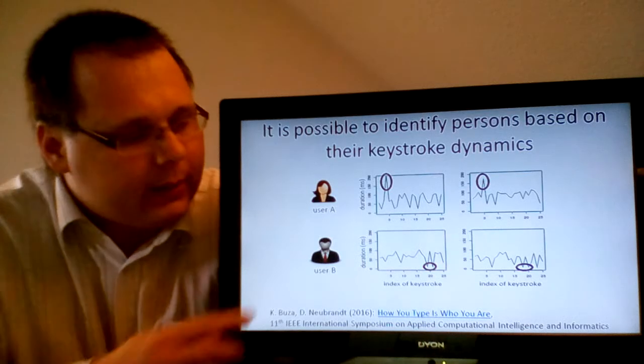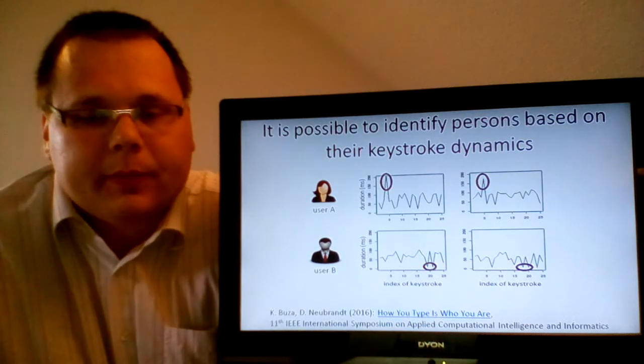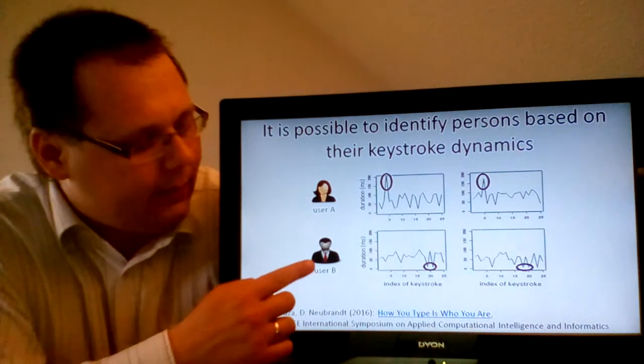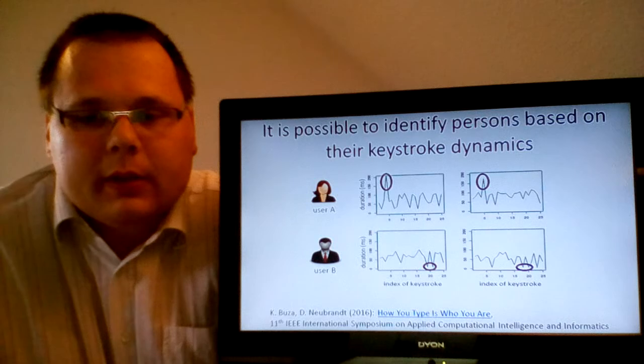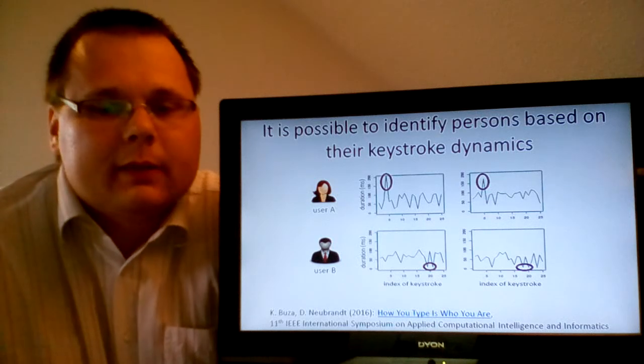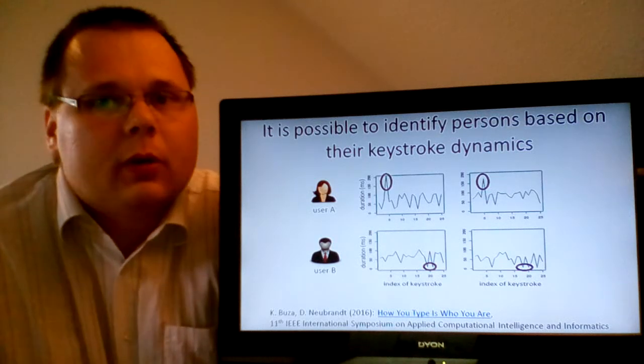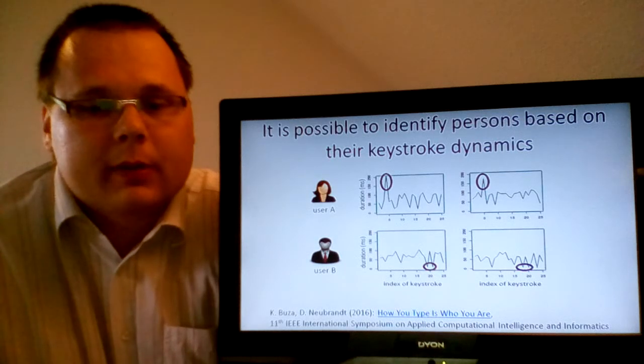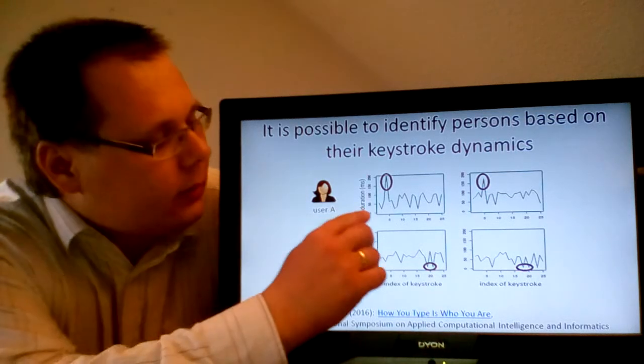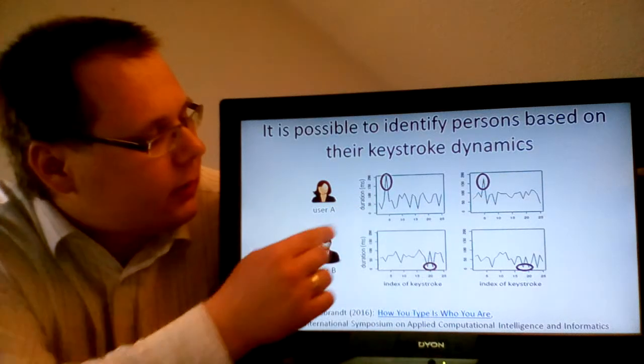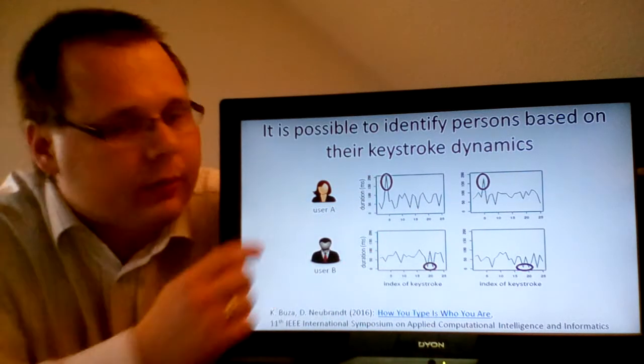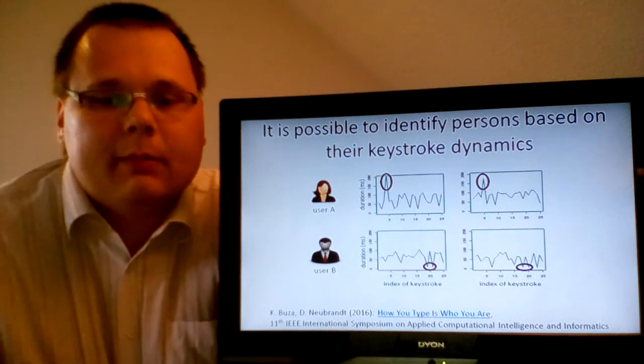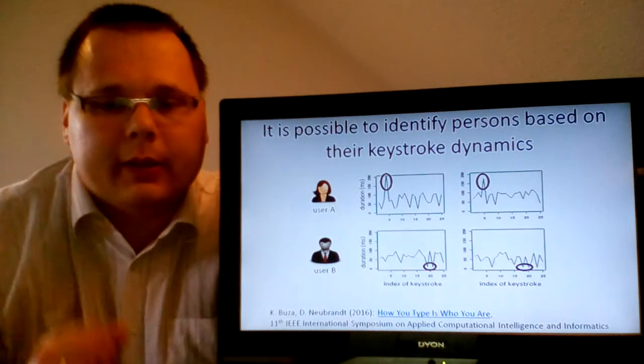This is illustrated on this slide that shows real data. Here two users are given, user A and user B, and both of these users type the same sentence twice and the durations of the first 25 keystrokes are shown in these diagrams. The horizontal axis corresponds to the index of keystrokes, whereas the vertical axis shows the duration. With duration of a keystroke, we mean the time between pressing and releasing a key.